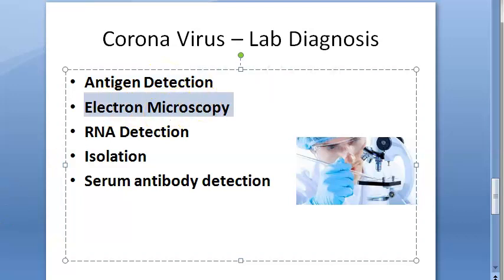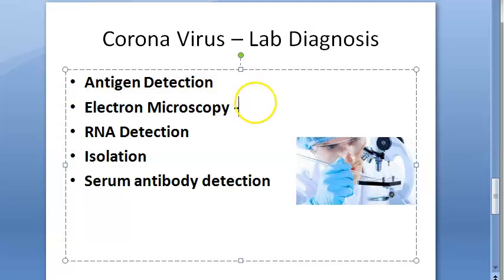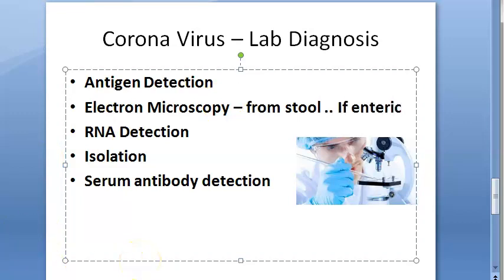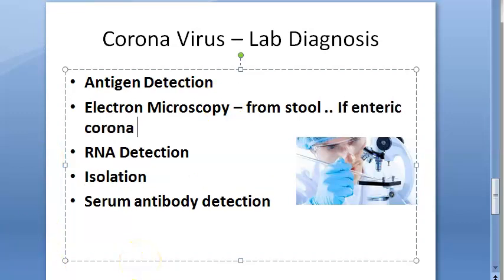Electron microscopy can also be used for detection. You already saw how it looks — the petal-shaped peplomers, etc. If it is enteric coronavirus — that is, it causes diarrhea — then from the stool you can detect it using electron microscopy. So coronavirus not only causes respiratory disorder, it can cause diarrhea also.